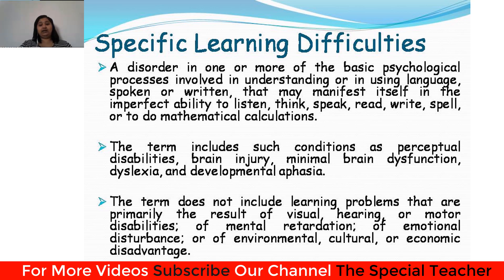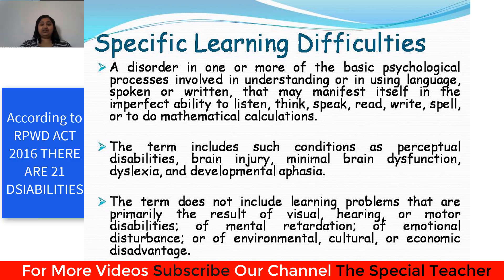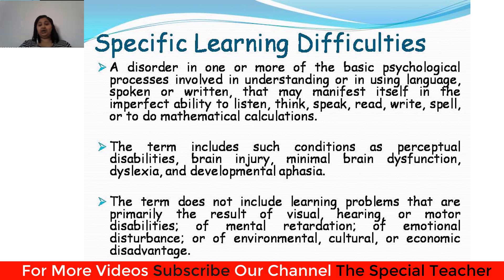Specific learning disabilities can be due to genetic or neurological factors that alter brain function in a manner which affects one or more cognitive functions related to learning. These processing problems actually interfere with a child's skills in learning, reading, writing, or math. They can also interfere with higher-level skills such as organization, time planning, abstract reasoning, and long or short-term attention.